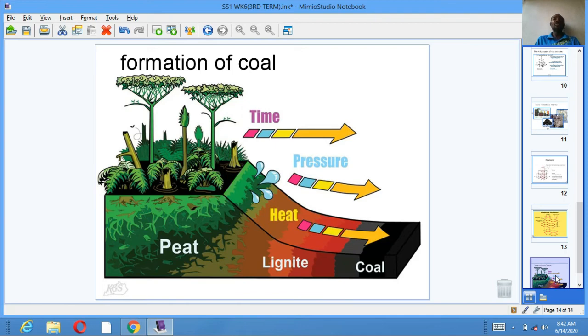Destructive distillation of coal. This is the process of heating coal in a furnace to a high temperature in the absence of oxygen to give coke, coal gas, and ammoniacal liquor. It also refers to gasification of coal.